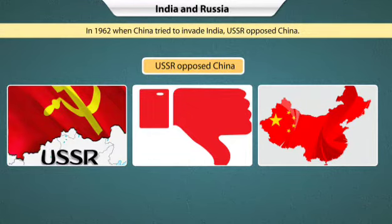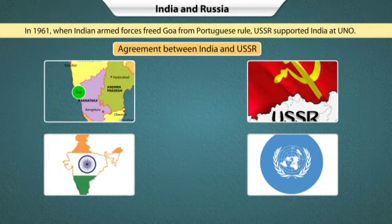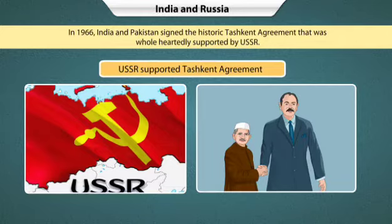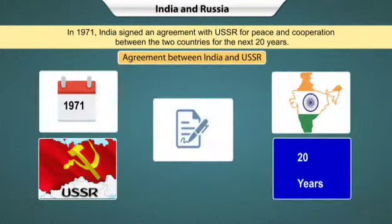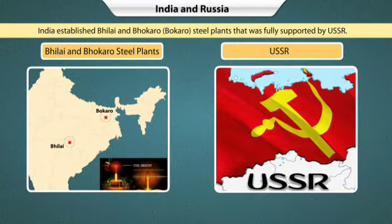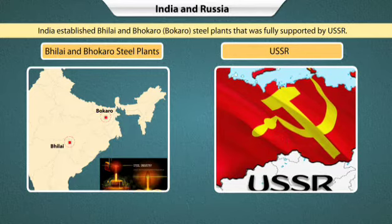In 1961, when Indian armed forces freed Goa from Portuguese rule, USSR supported India at the UNO. In 1966, India and Pakistan signed the historic Tashkent Agreement, wholeheartedly supported by USSR. In 1971, India signed an agreement with USSR for peace and cooperation for the next 20 years. To develop the iron and steel industry, India established Bhilai and Bokaro Steel Plants, and USSR provided full support in the establishment of these plants.